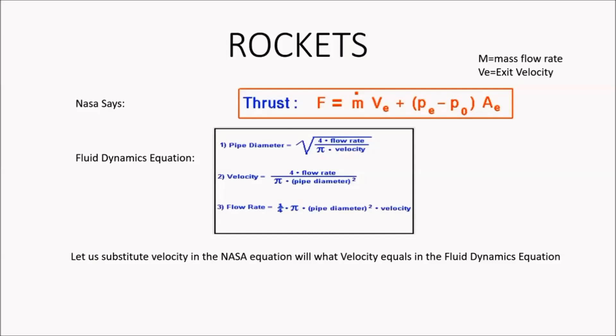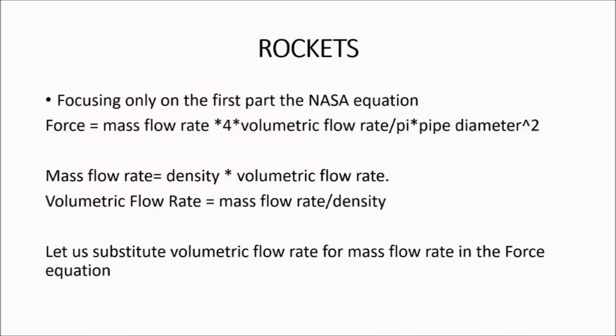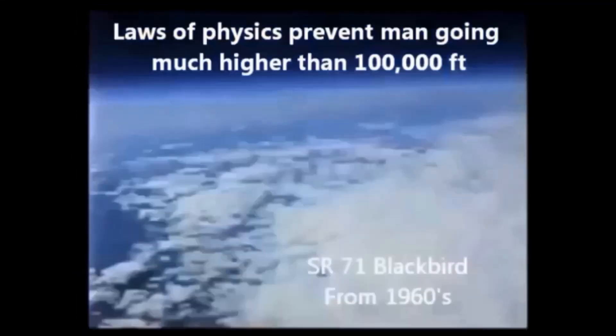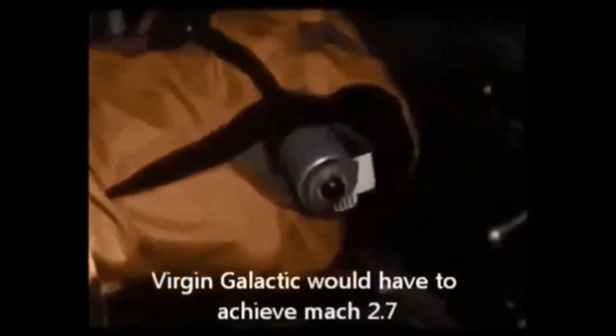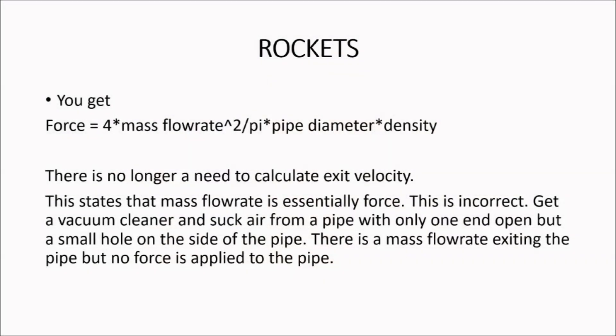This first equation is how NASA says rockets work. The second equation is the fluid dynamics equation for movement of fluids through a pipe. Similarly, rocket exhaust is the fluid which moves through the nozzle pipe. Both equations have velocity, so substituting velocity in the NASA equation with what velocity equals in the fluid dynamics equation yields: after substitution, mass flow rate equals density times volumetric flow rate. Converting volume to mass with density and substituting gives four times the mass flow rate squared divided by pipe diameter squared and density. This means exit velocity no longer needs to be calculated separately.